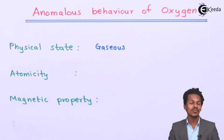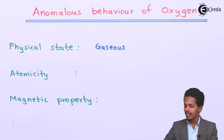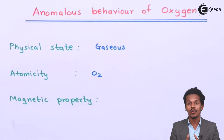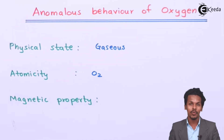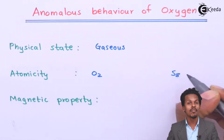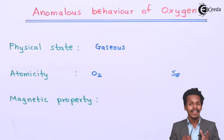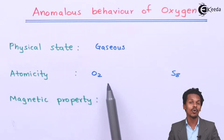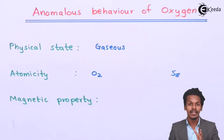The next point is atomicity. Dioxygen is a diatomic molecule, while the rest of the elements belonging to Group 16 are polyatomic molecules. For example, sulfur is present in the form of S₈, meaning it has eight atoms of sulfur in a molecule.